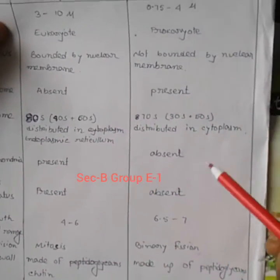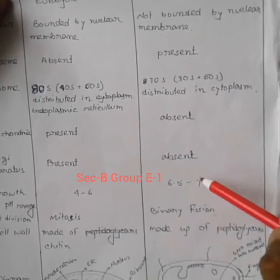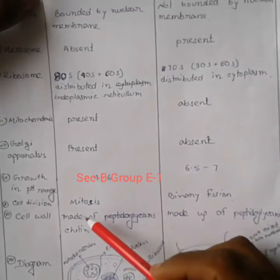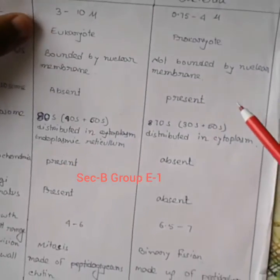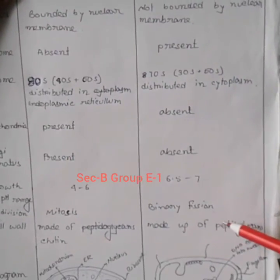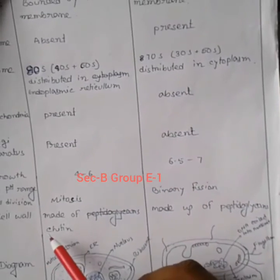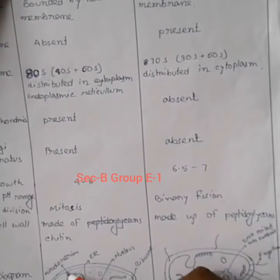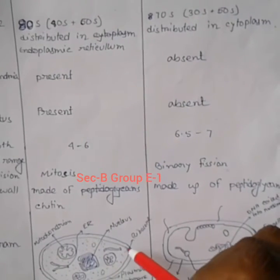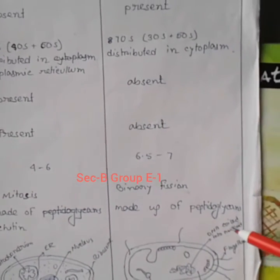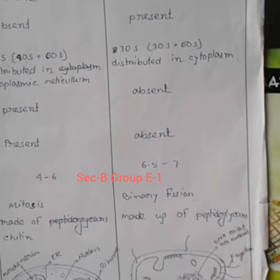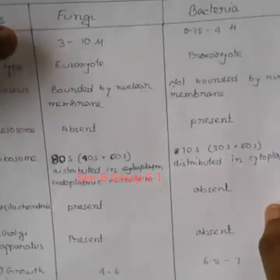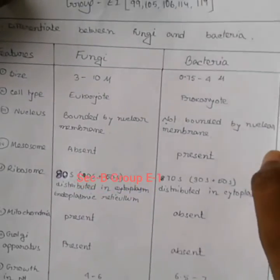In cell division, fungi undergo mitosis type cell division, while in bacteria, binary fission is observed — one cell is made by division where a membrane forms across the cell. The bacterial cell wall contains peptidoglycan. This is the main difference between fungi and bacteria.